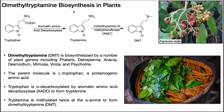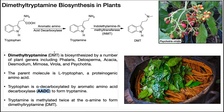Dimethyltryptamine is only biosynthesized in plants — it's not made by mammals. Here's its biosynthetic pathway. We begin with the amino acid tryptophan, one of our 20 proteinogenic amino acids. In plants, it can be decarboxylated by this enzyme, aromatic amino acid decarboxylase, sometimes abbreviated AADC. This enzyme removes the carboxyl group, and so we're left with just the amine.